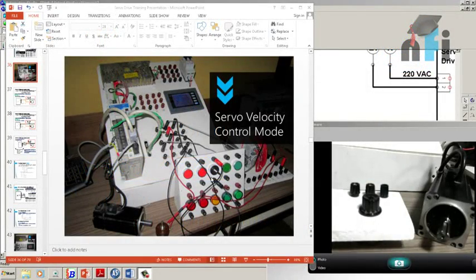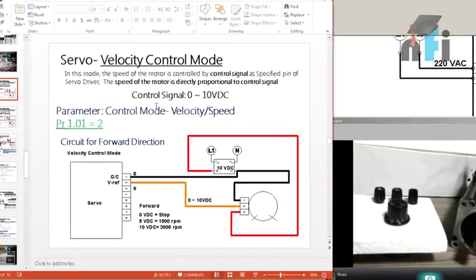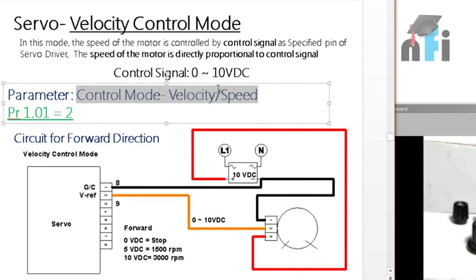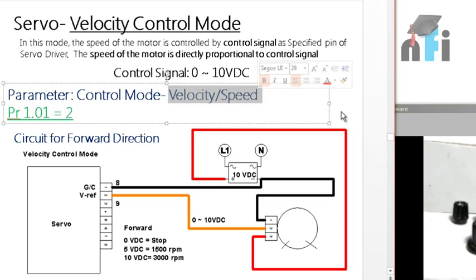We are going to talk about server velocity control mode. In this mode, we can control the speed and direction of the servo motor using 0 to 10 volt signals. The first step is to define the control mode, which should be velocity or speed. The servo has three main modes: position, velocity, and torque, plus some dual modes.